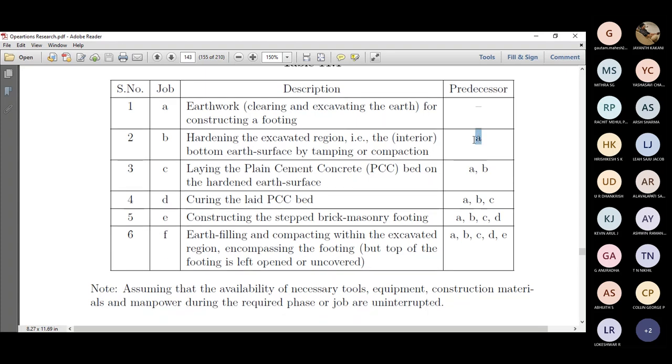Then you can see the predecessors. Just pretty straightforward because B depends on A and C depends on A and B. So this is the entire predecessor. You can find out the immediate predecessor. The immediate predecessor might be B. So immediately before this. And for D, it is A, B, C. But you have to add a duration to it. Like clearing earthwork takes one day, hardening takes half a day, laying a PCC takes one day, curing takes four days, and constructing brick footing may take two days. Then earth filling is just half a day or something.